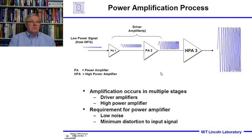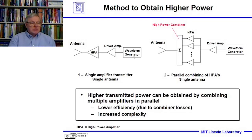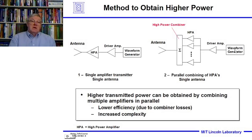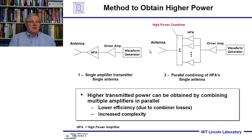Architecturally, we can configure amplifiers differently. We can have a waveform generator, a driver amplifier, and then a high power amplifier with the signal going out to the antenna. Or we can take a driver amplifier output, divide it up into a series of high power amplifiers, and then combine their outputs with a summing mechanism — increasing power by combining signals in parallel.